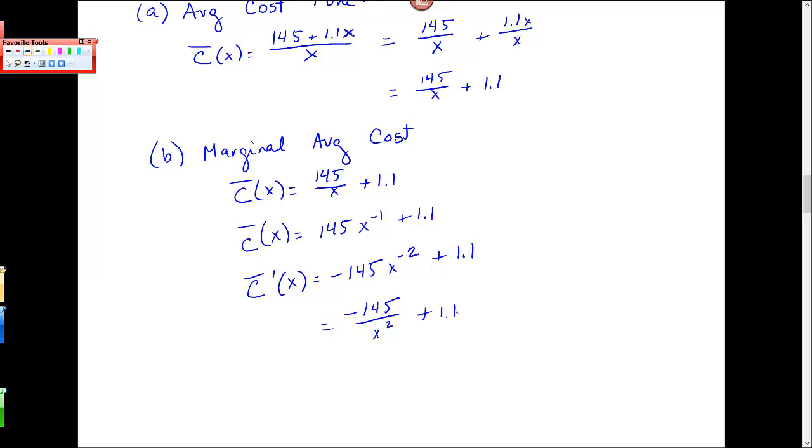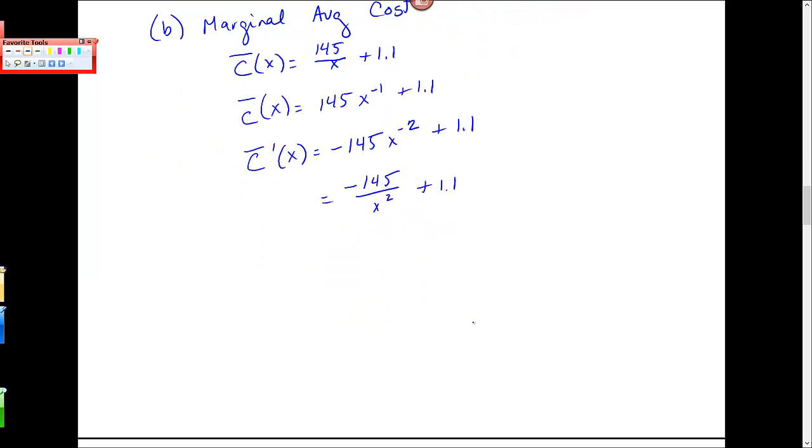So I mean it's the same process for marginal revenue, for marginal average revenue, for marginal profit, for marginal average profit. Same procedure. For these other functions, form these average cost functions, or average revenue functions, average profit functions, and take the derivatives.